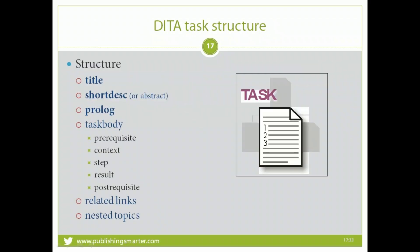In the DITA world, the task answers the question 'how?' — it tells the user what to do and the order in which to do it. The structure is: a title, a short description, a prologue, and then the task body. Title, short description, and prologue are common in almost everything you do in DITA. Once you understand how those three work, you've got a good chunk of DITA figured out. The task body, concept body, and reference body each have some unique pieces that require additional learning.